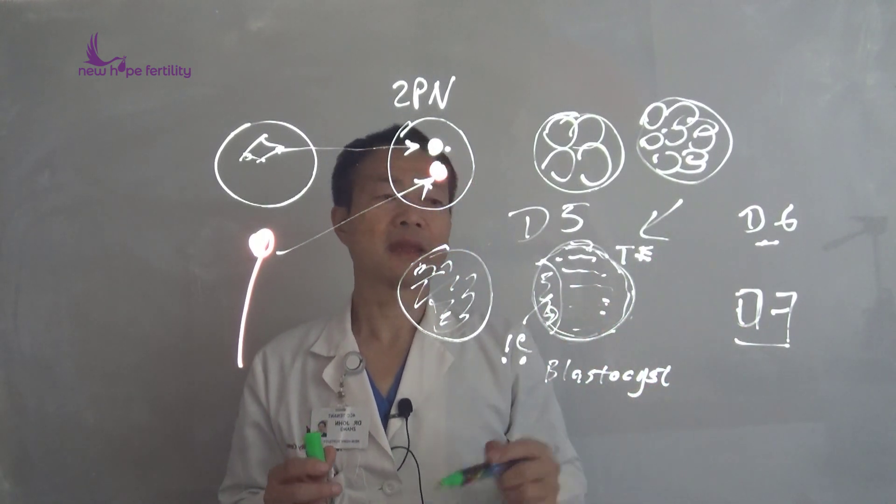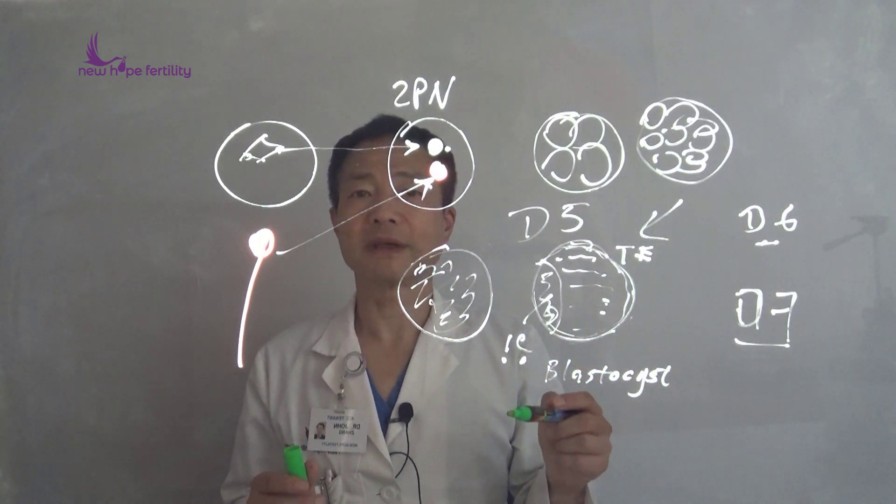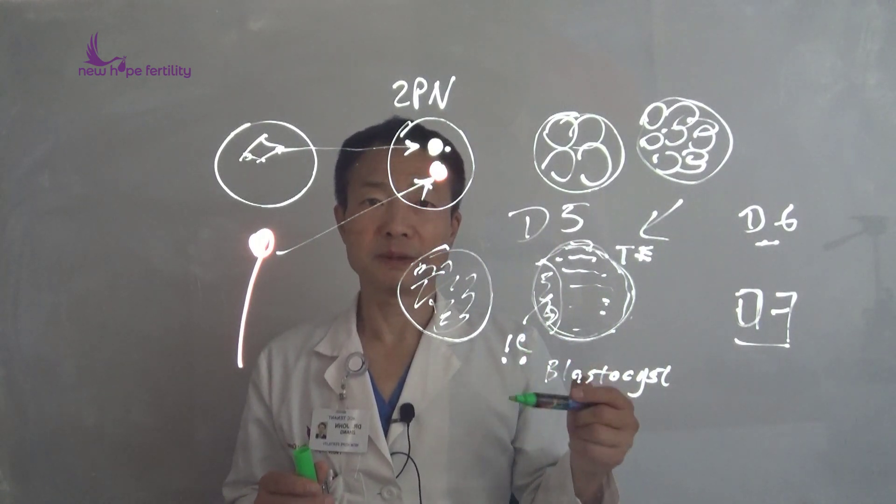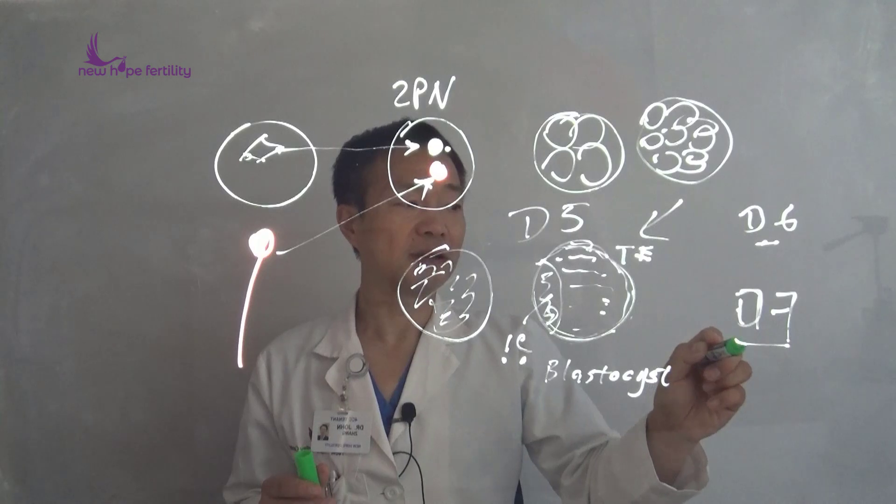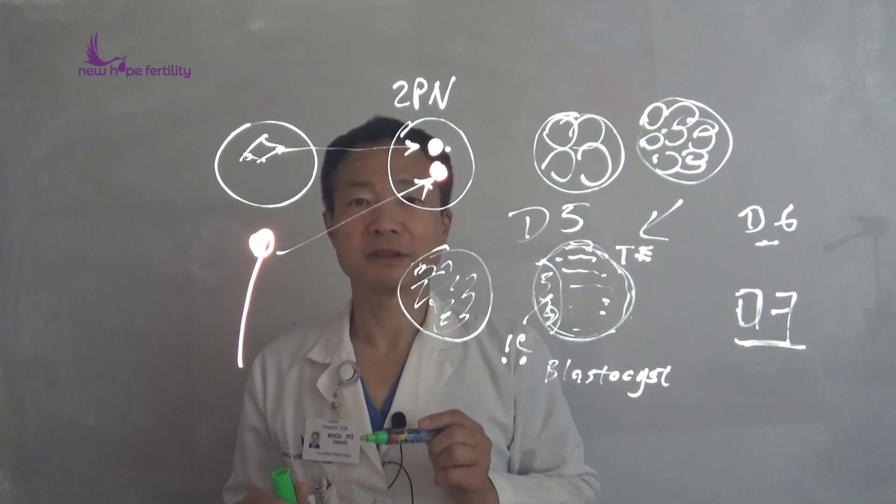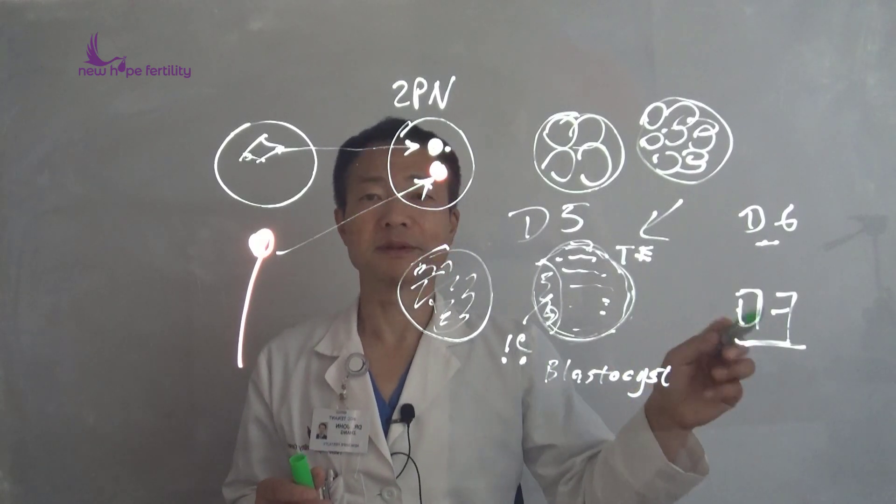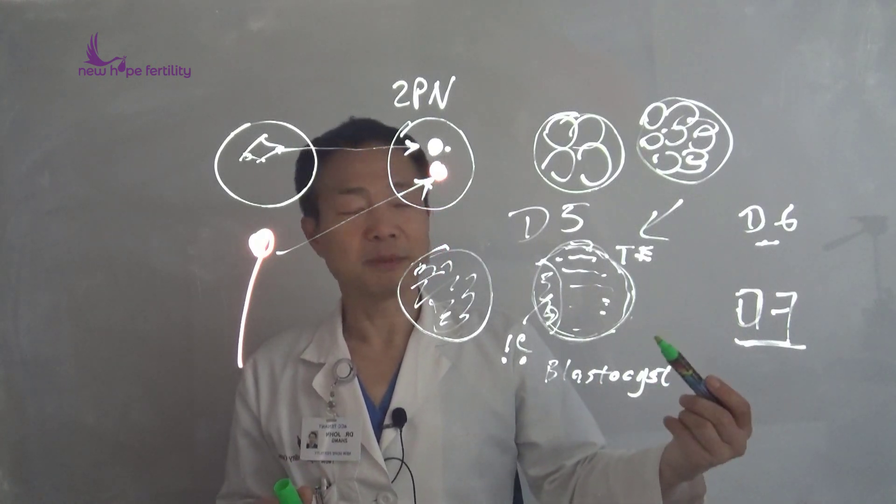If it takes a long time, this indicates the embryo quality may be reduced, with a reduced chance to get pregnant. Sometimes patients don't have much confidence, and even doctors say day 7 embryos are not as good, so they may discard or give up on them.